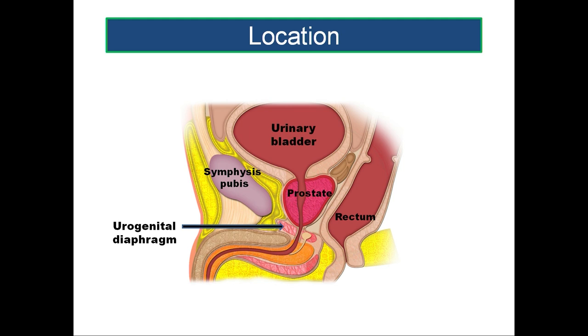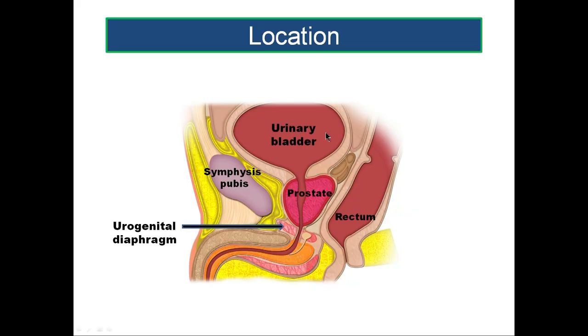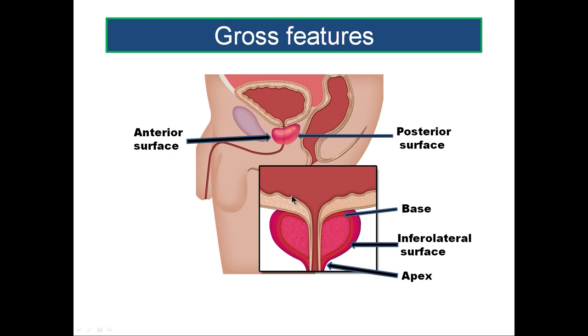Now let us look at where this prostate is situated. Prostate is situated in the lesser pelvis. It is below the neck of the urinary bladder, above the urogenital diaphragm. It is behind the lower half of the pubis and in front of the rectal ampulla. On either side is the levator ani. So we know the prostate is of chestnut shape with a compressed inverted cone-like appearance.